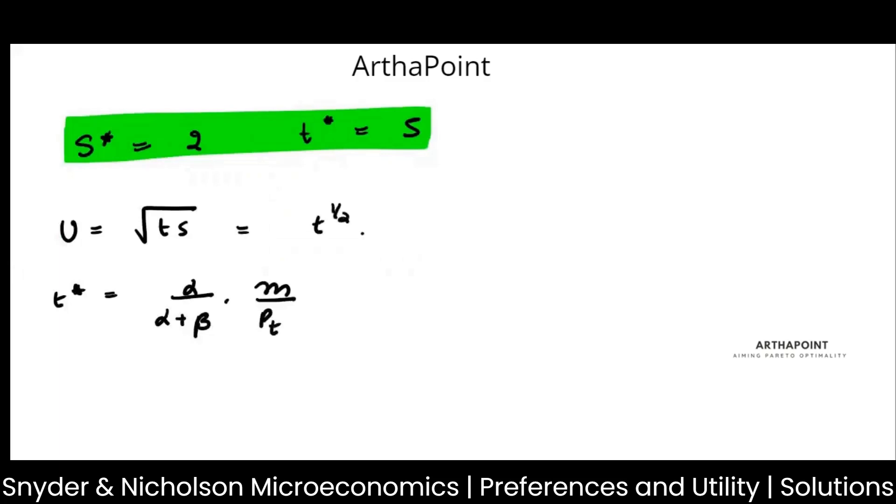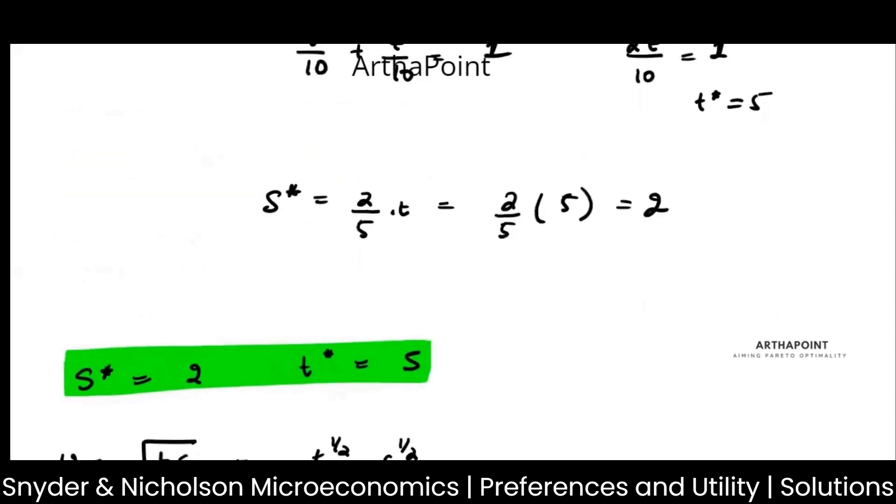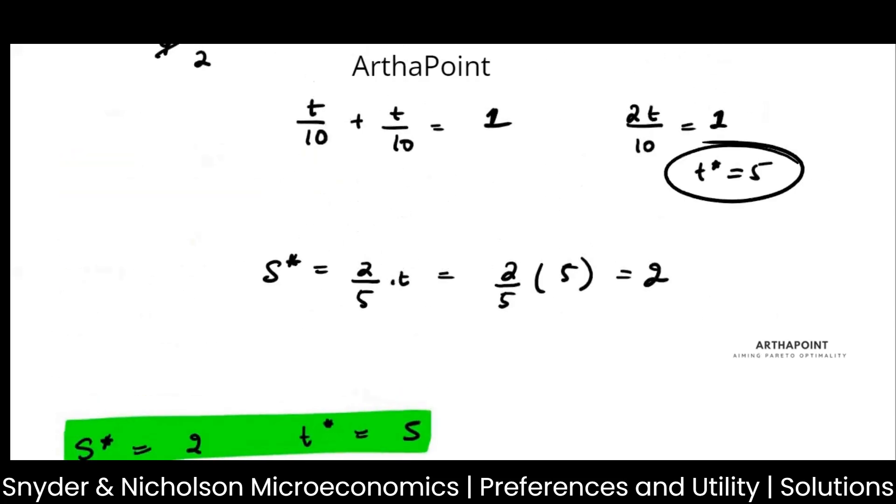This is T to the power half into S to the power half, so alpha is half, alpha plus beta is half plus half. Into M, what is your M? M is your income, which is 1, and price of T is given by 0.1. So this will be half into 1 divided by 0.1, so it will be 10 by 2, which will be 5. Simply you get the answer as 5.